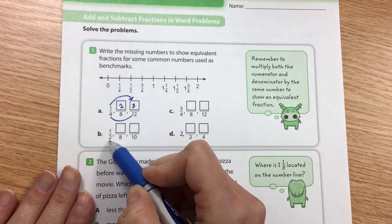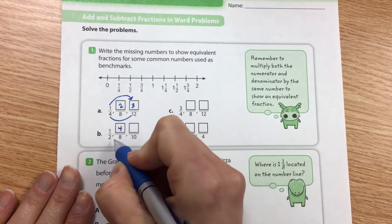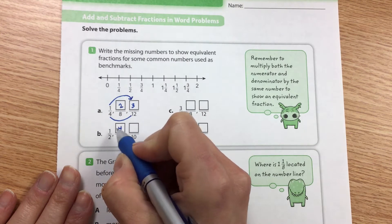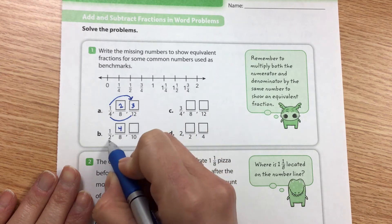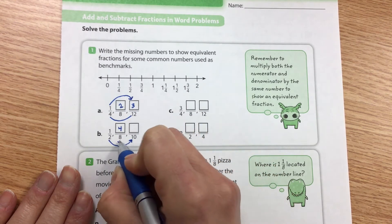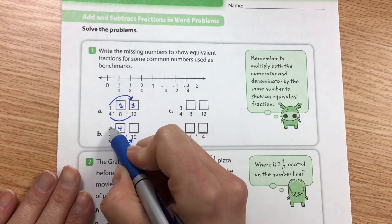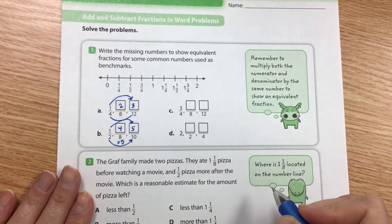Down here one half is the same thing as something over eight. That would be four. We multiplied our two by four to get eight, we multiply our one by four, we get our four. What are we doing to two to turn it into ten? We're multiplying it by five, so we do the same thing to our numerator and we get five right there.